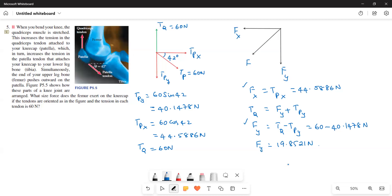Now what I do is I have to find out F. So F is equal to square root of Fx square plus Fy square. Therefore F is equal to square root of Fx, so what is Fx? 44.5886 N. Therefore F is equal to, what is the F value? F is equal to 48.80 N. So this is the answer for this question.